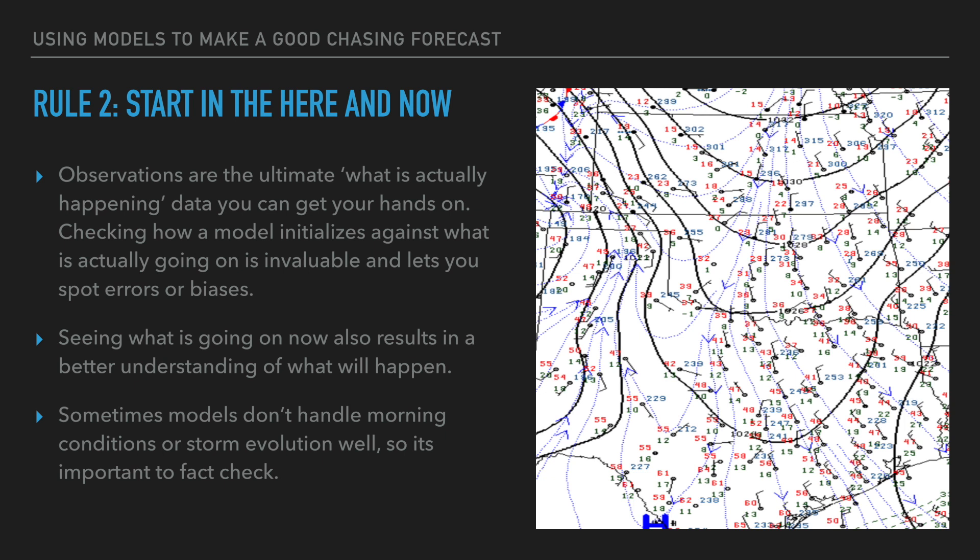That results in a better understanding of what will happen. Moisture and the cap are two very big things storm chasers deal with when it comes to models. If a model is overdoing moisture, it's going to tend to fire more storms than are actually going to happen — that's a general rule. Models also sometimes don't handle morning conditions well or storm evolution well in the morning, so you've got to fact-check. Many times you won't get a model pumping out the right storm at the right time, or morning convection isn't handled well — usually on the higher-risk days when models really let you down.